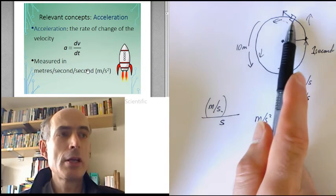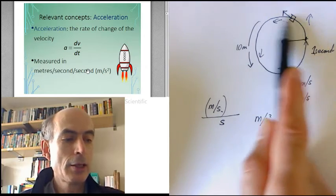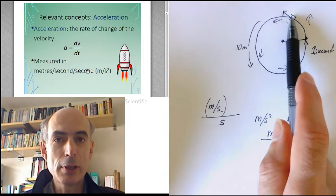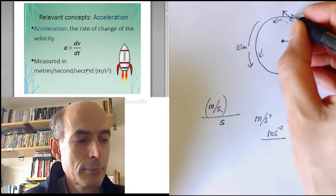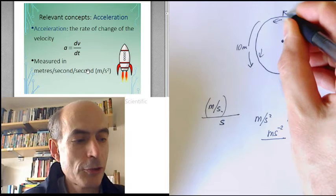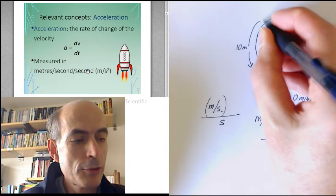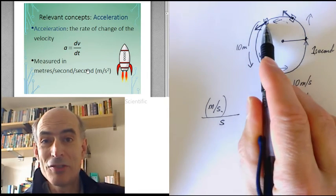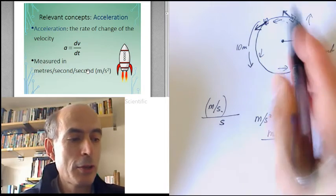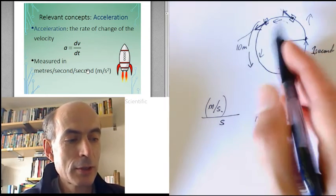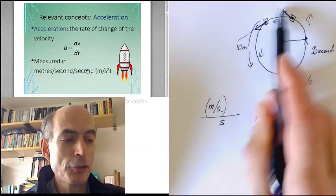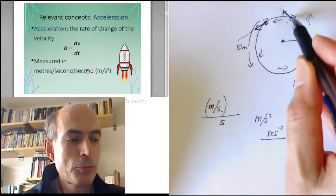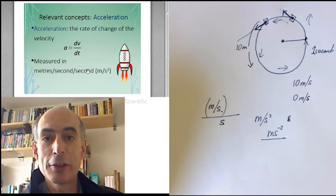This object here, going around a circle, it has an acceleration. It is constantly accelerating, because its velocity is constantly changing. Here, instantaneous velocity is going in that direction. Here, the instantaneous velocity is going in that direction. The speed hasn't changed. That's still 10 meters per second. But its velocity has changed, because it's going in a different direction. And if its velocity is changing, then that means it is accelerating. So this object, going around and around this circle, is constantly accelerating.